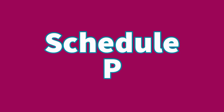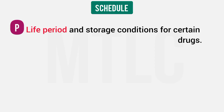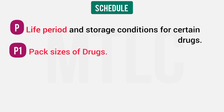Schedule P — P for Period — covers the life period and storage conditions of drugs. Schedule P1 covers the pack size of drugs.